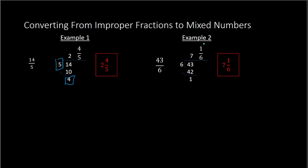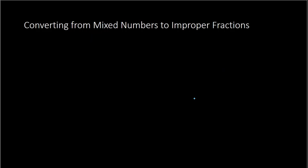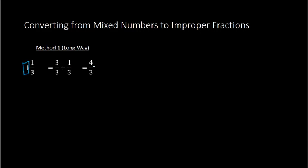Now let's go the other way — converting a mixed number to an improper fraction. The longer method: with 1 and 1 third, we write the whole number 1 as a fraction with the same denominator as the fraction part. Since the fraction is in thirds, we write 1 as 3 over 3. Then 3 over 3 plus 1 over 3 — we add the numerators: 3 plus 1 gives us 4 over 3.